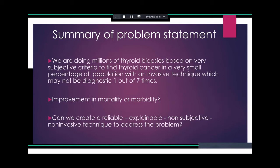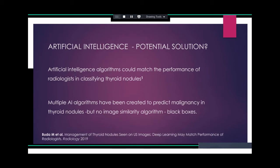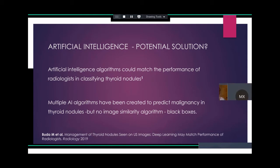We thought about ways to optimize this problem and asked ourselves: can we create a reliable, explainable, non-subjective, non-invasive technique to address this? AI is being used in different medical fields, and recent studies have shown that AI algorithms could match the performance of radiologists in classifying thyroid nodules. There are multiple AI algorithms to predict malignancy in thyroid nodules. Some use features like TIRADS or ATA criteria, but most image-based ones are black boxes — they don't give a reason why a nodule is called benign or malignant.